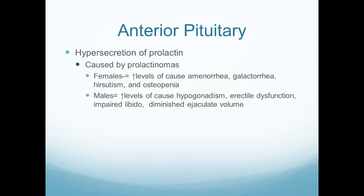The anterior pituitary can also over or under-produce prolactin. High prolactin secretion in females can cause problems with menstrual periods and fertility. In males, high prolactin can cause hypogonadism - erectile dysfunction, impaired libido, and problems with procreation.